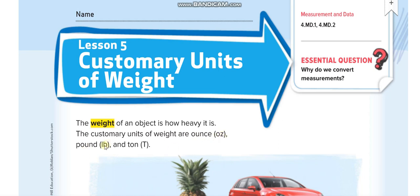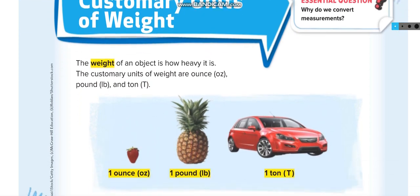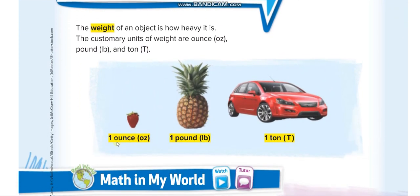The customary units of weight are ounce (oz, the short form is oz), pound (lb), and ton (capital T). One ounce is like a small strawberry—it's very light. One pound is equal to a pineapple like this one.